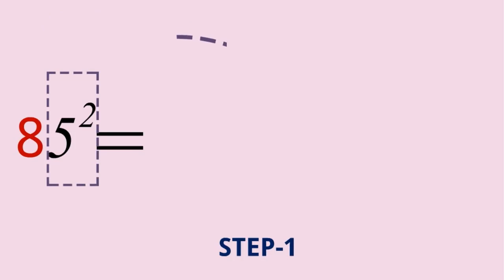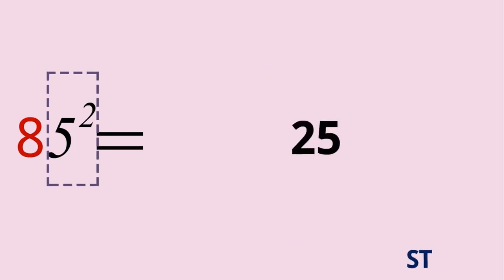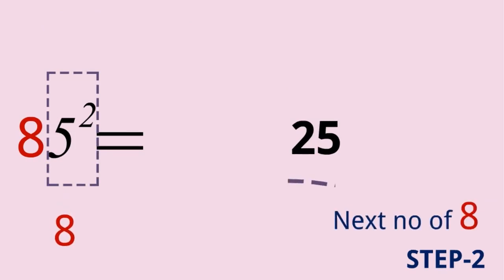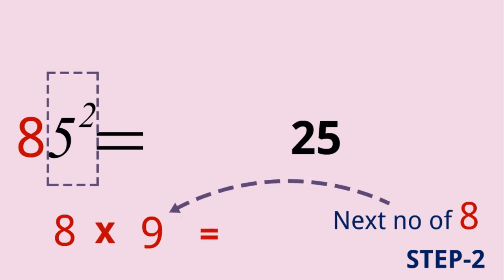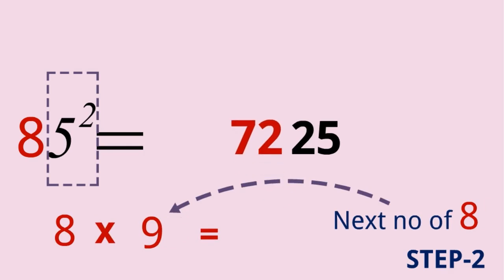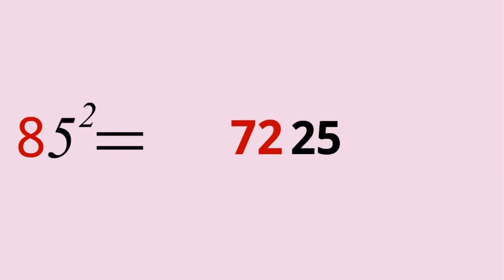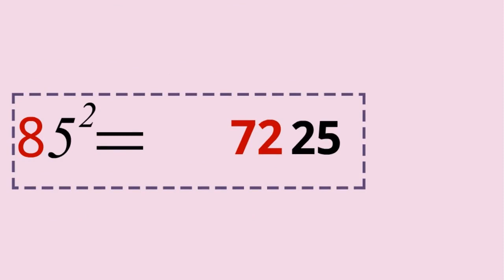Another example: 85 squared. Step one: 5 squared means 25, and it will be here. Step two: 8 is here and the next number of 8 is 9. We multiply 8 and 9: 8 multiplied by 9 is equal to 72, and this 72 will be moved here. So it becomes 7225. 85 squared is equal to 7225.